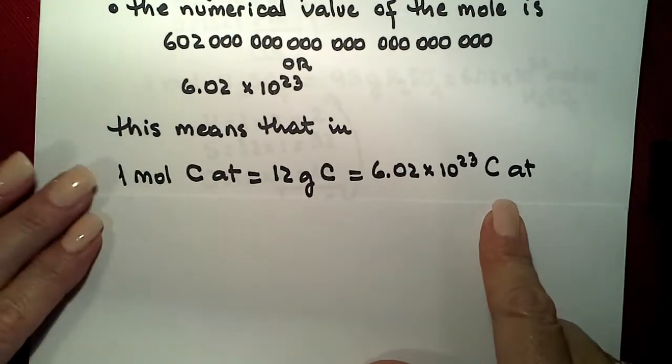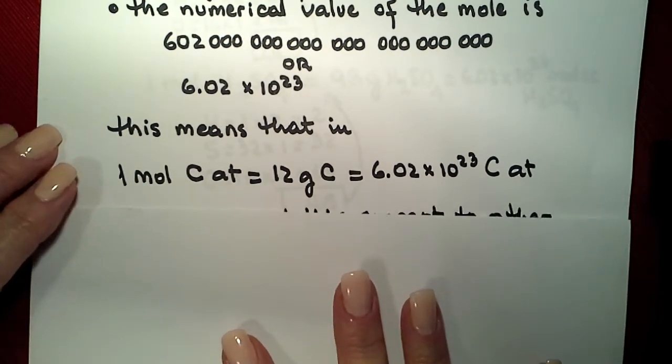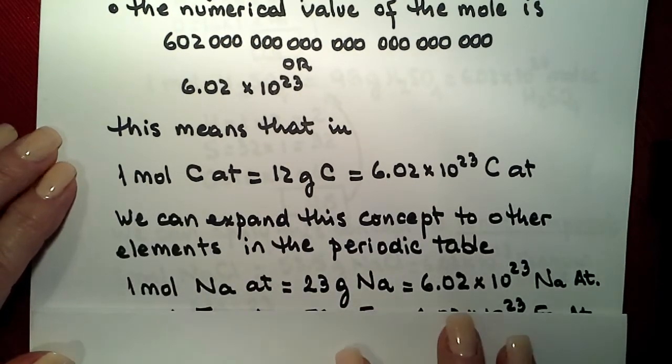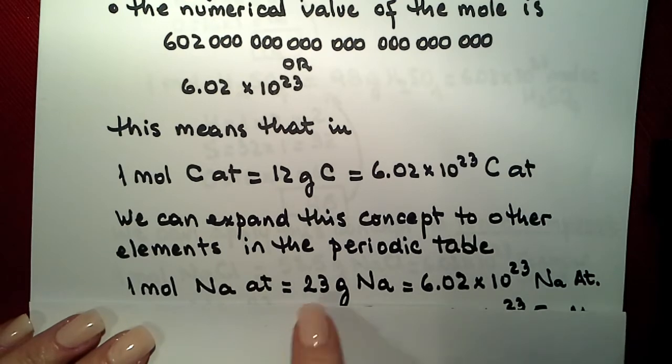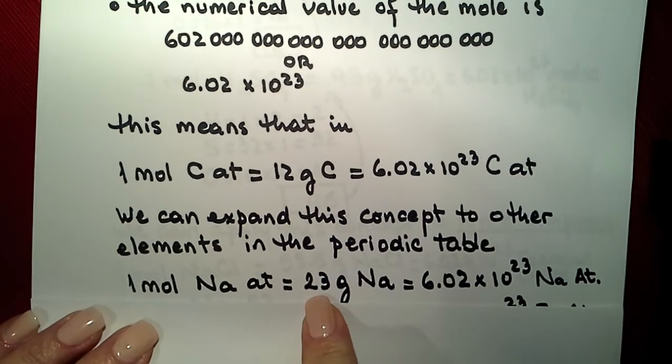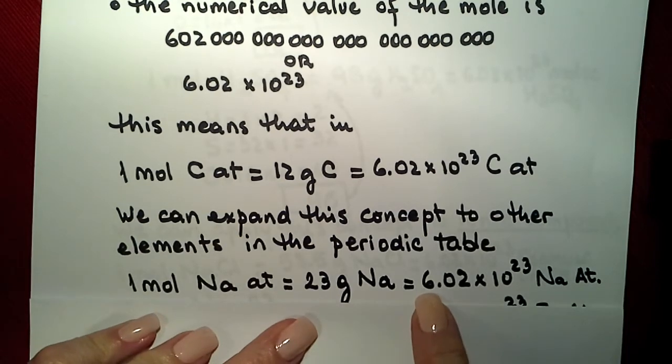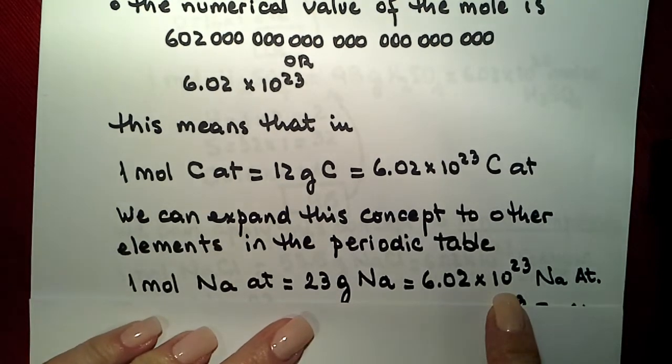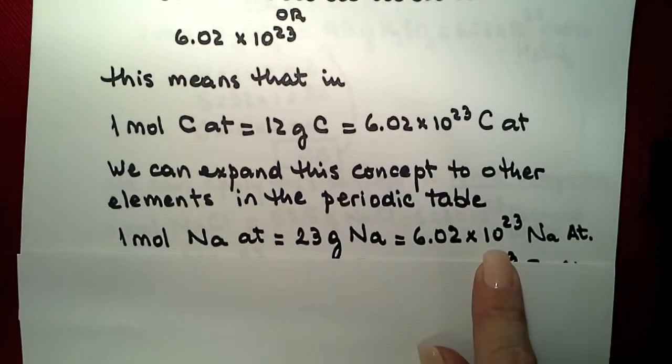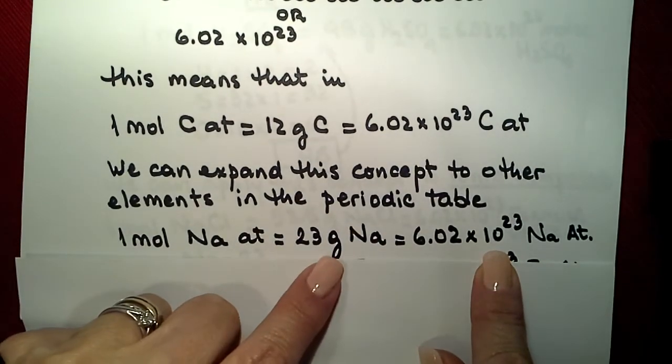We can even expand that to other atoms. In general, if we get the mass of the periodic table expressing grams for any other element, we can say that in that amount of grams, we are going to have one mole of atoms or 6.02 times 10 to the 23rd atoms of sodium in this case, because we are talking about 23 grams of sodium.